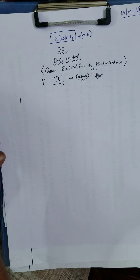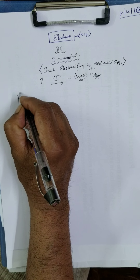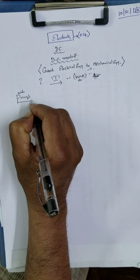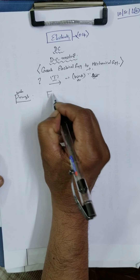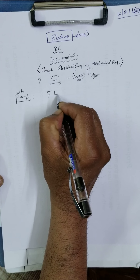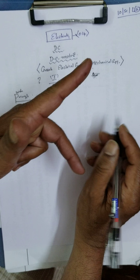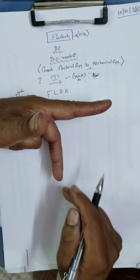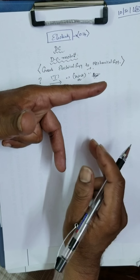What is the working principle? The working principle is Fleming's left-hand rule. This is the direction of the magnetic field, this is the direction of the current, and this is the force.